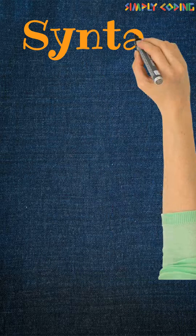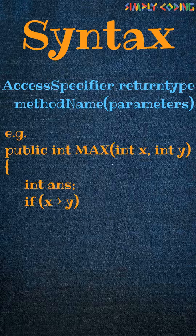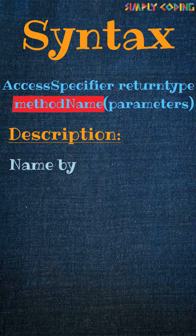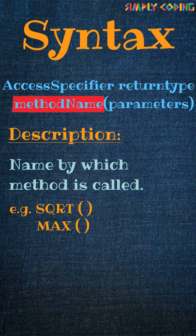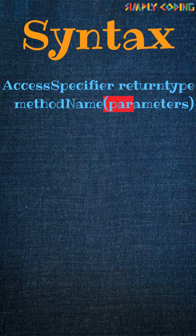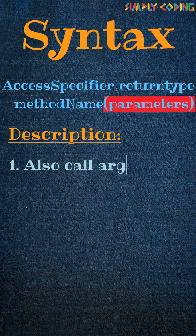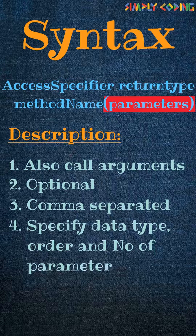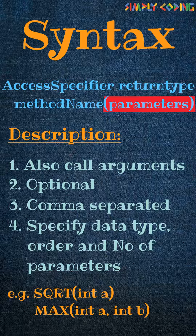Now let's look at the syntax for method definition, or how you write a method. First is the method name — this is the name by which the method is called. Then there is the parameter list. Parameters are also called arguments; they are optional, comma-separated, and specify the data type, order, and number of parameters passed. For example, a square root function would need only one parameter, while a max or min function would take two parameters.